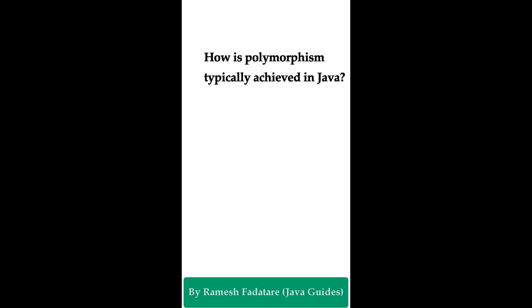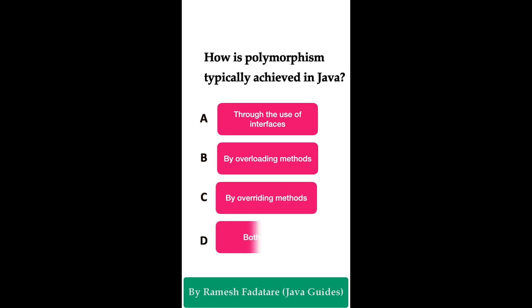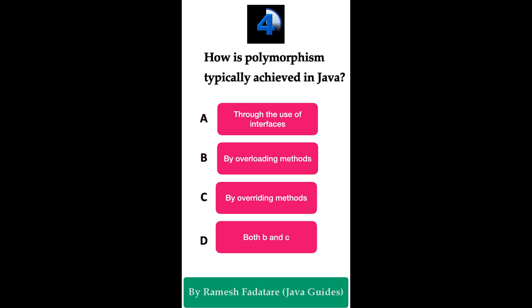Welcome to Java Quiz Series. Here is one more question: How is polymorphism typically achieved in Java? Option A: through the use of interfaces. Option B: by overloading methods. Option C: by overriding methods. Option D: both B and C. You have five seconds to answer.